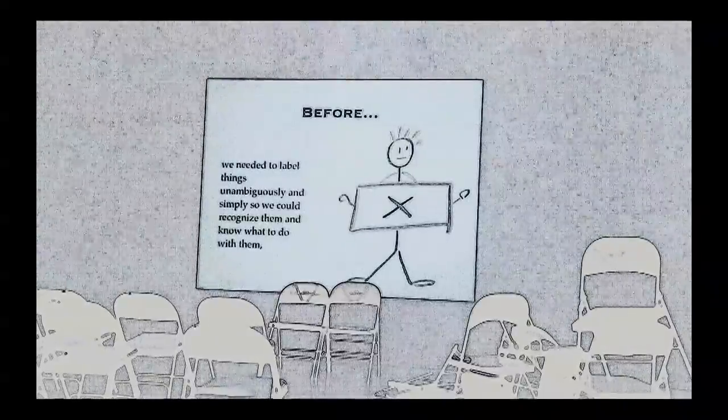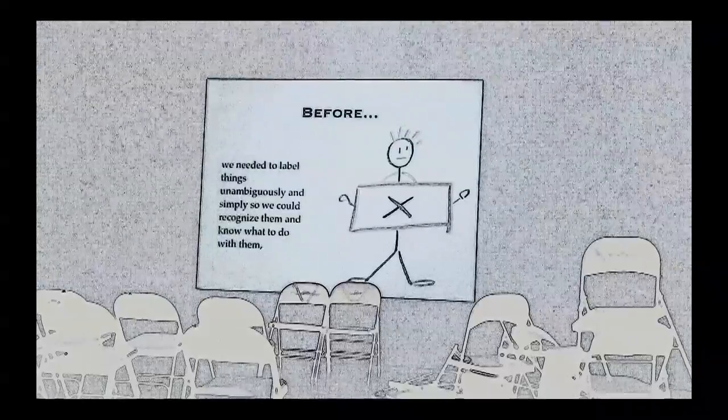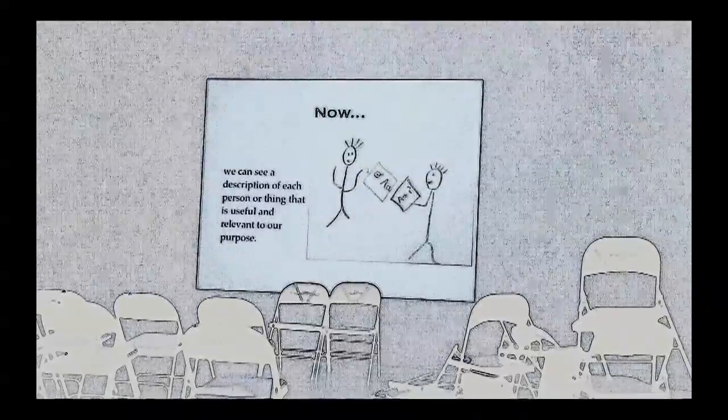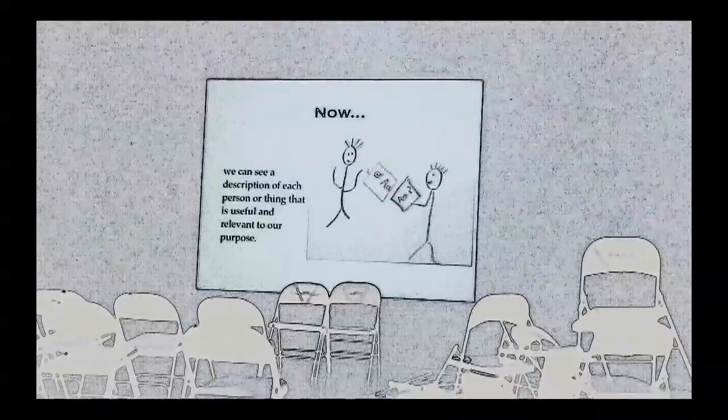Before, we needed to label things unambiguously and simply so we could recognize them and know what to do with them. Now we can see a description of each person or thing that is useful and relevant to our purpose.